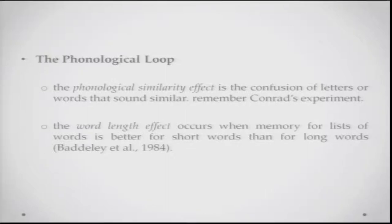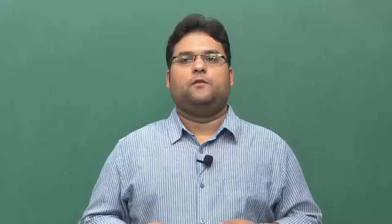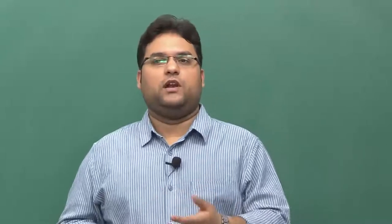Another effect about the phonological loop is the word length effect. The word length effect occurs when memory for a list of words is better for short words than for long words. If given a list containing 3–4 letter words alongside 5–7 letter words, the typical finding is that memory for shorter words is better than memory for longer words.